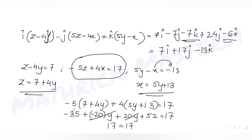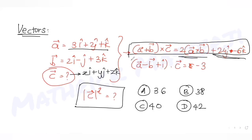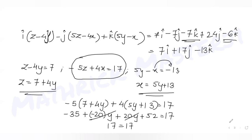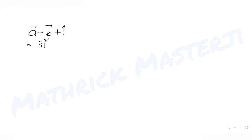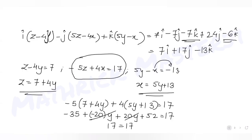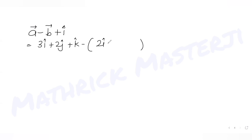We now use the second condition: (a − b + i) · c = −3. Let's first compute a − b + i. We have a = 3i + 2j + k and b = 2i − j + 3k.